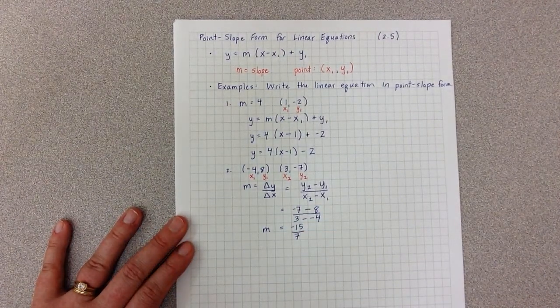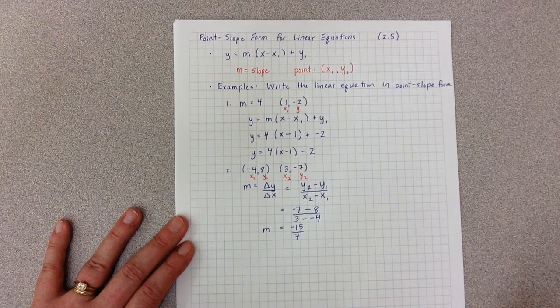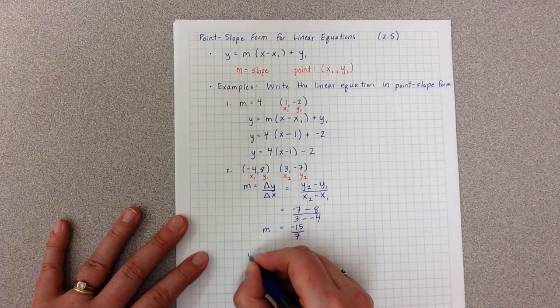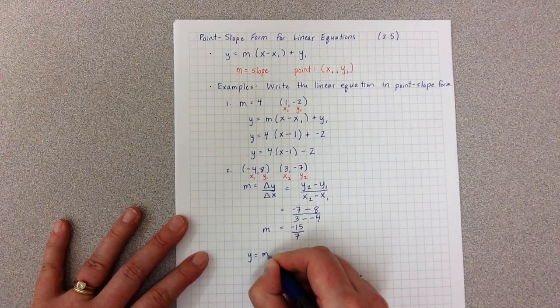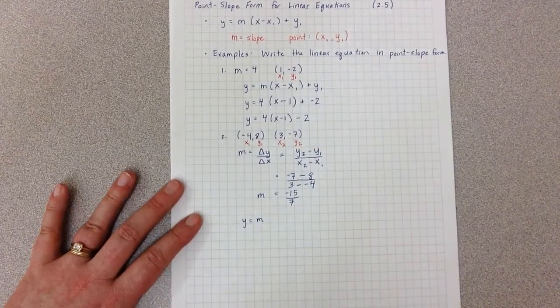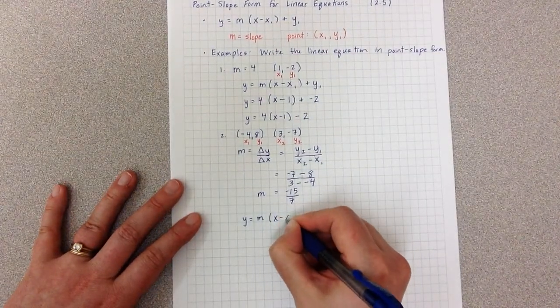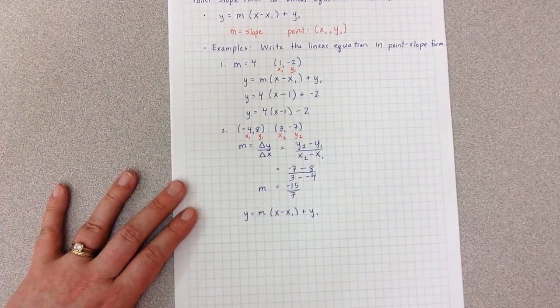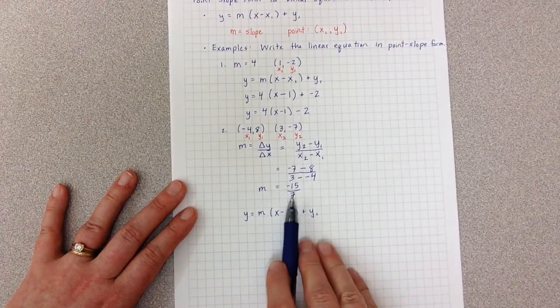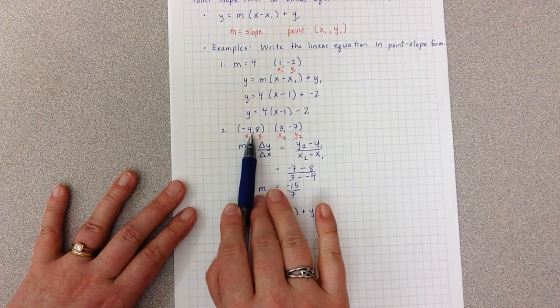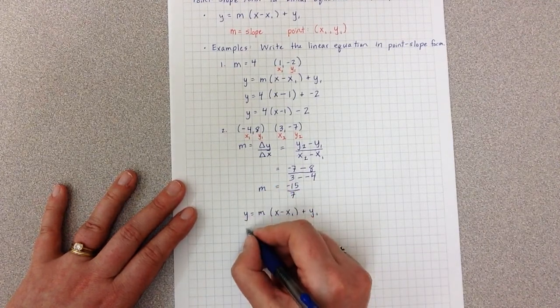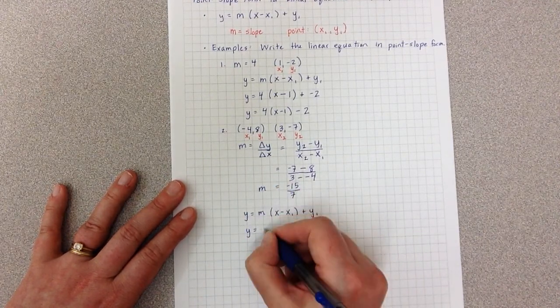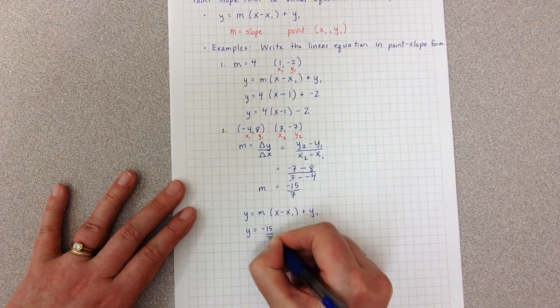I also have 2 points. So I can write 2 different versions of this line. So I have y equals m times x minus x1 plus y1. In my first version, I'm going to use this slope and this first point. So I replace my m with my slope, negative 15 over 7.